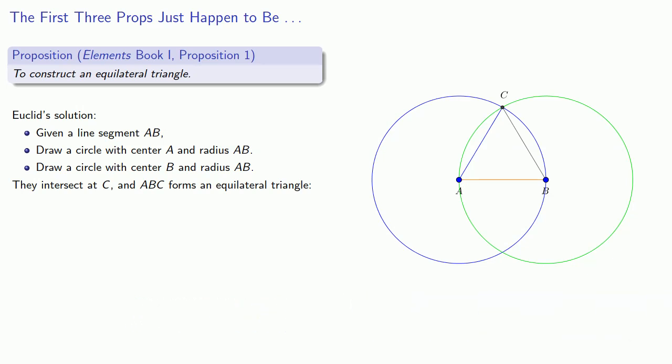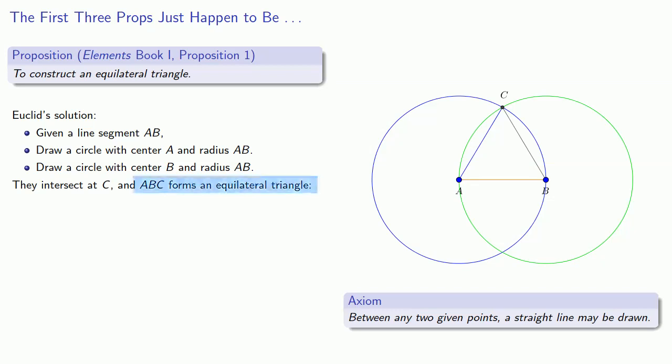What about the size of the triangle? Well, the very first axiom tells us that we can join any two points with a straight line. And that means this triangle ABC exists.